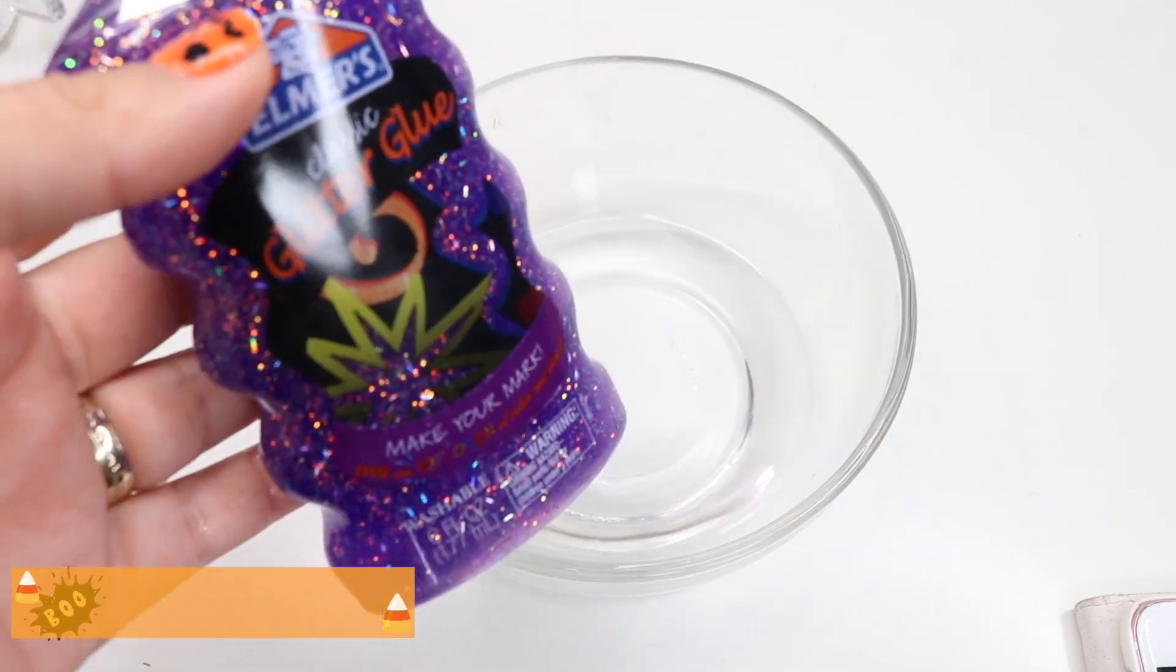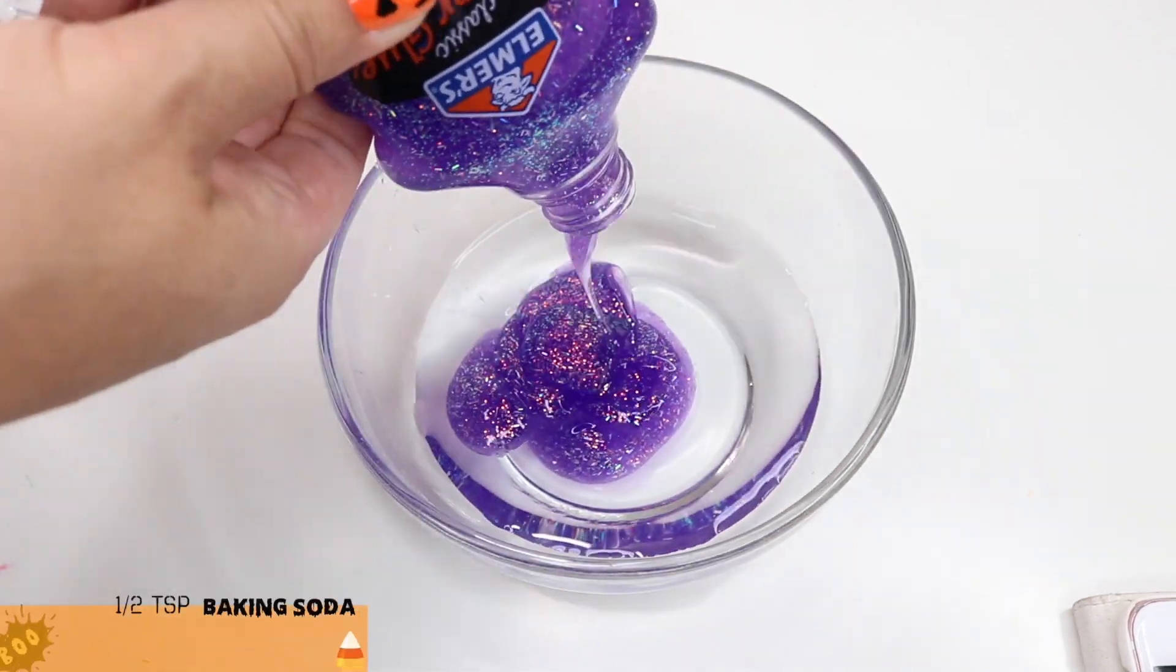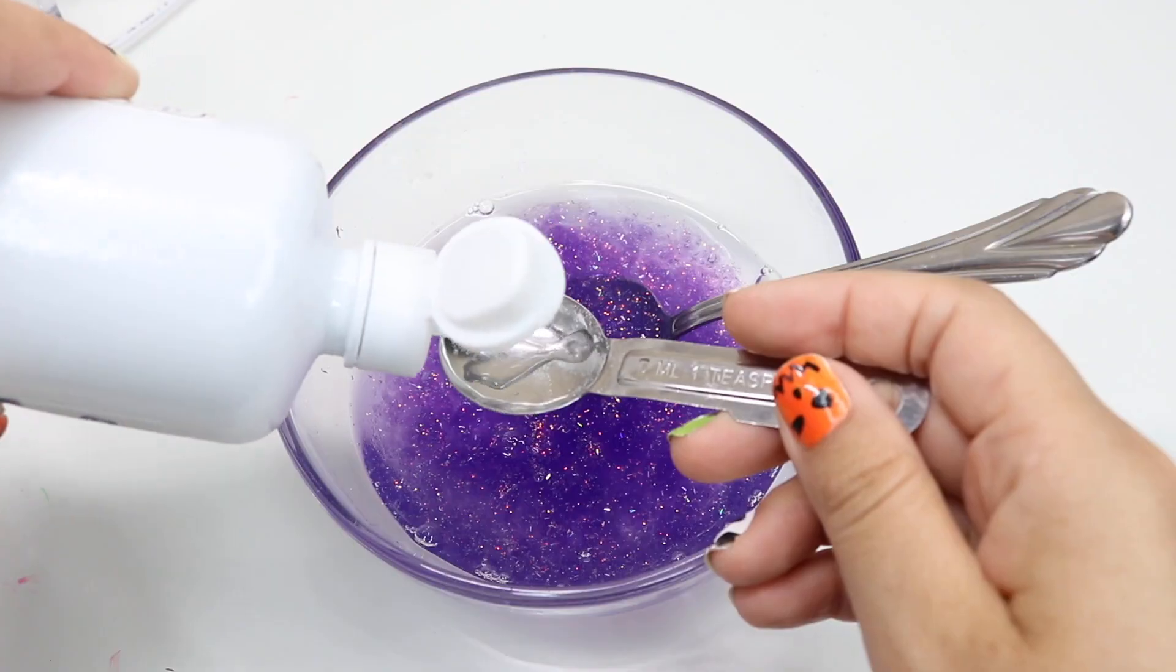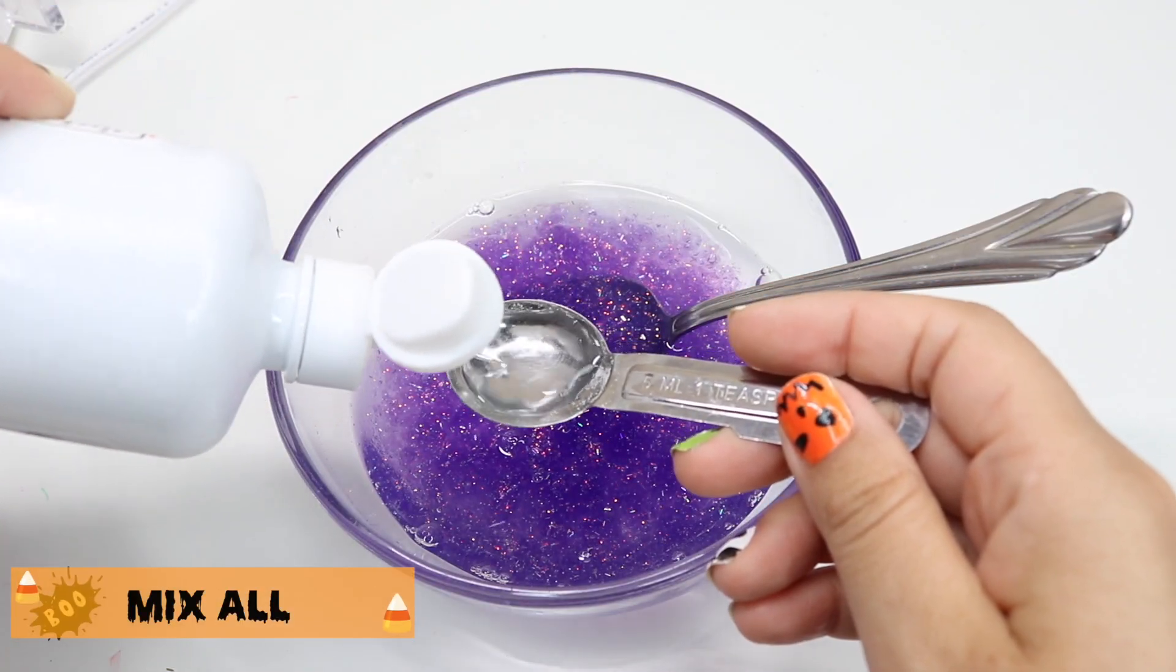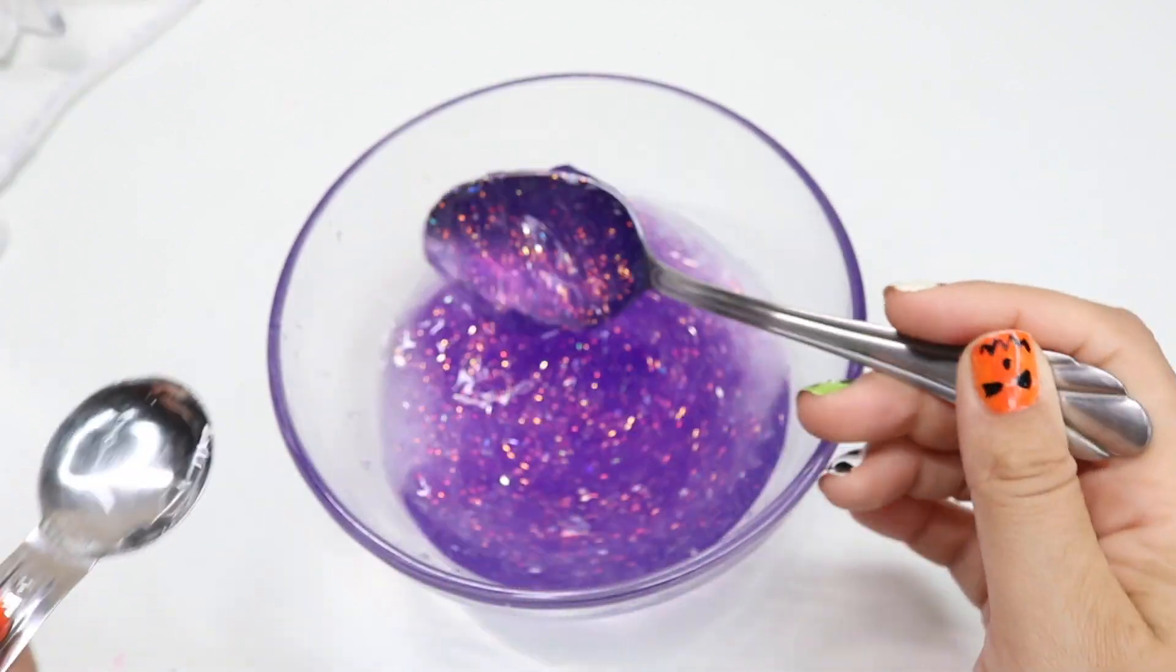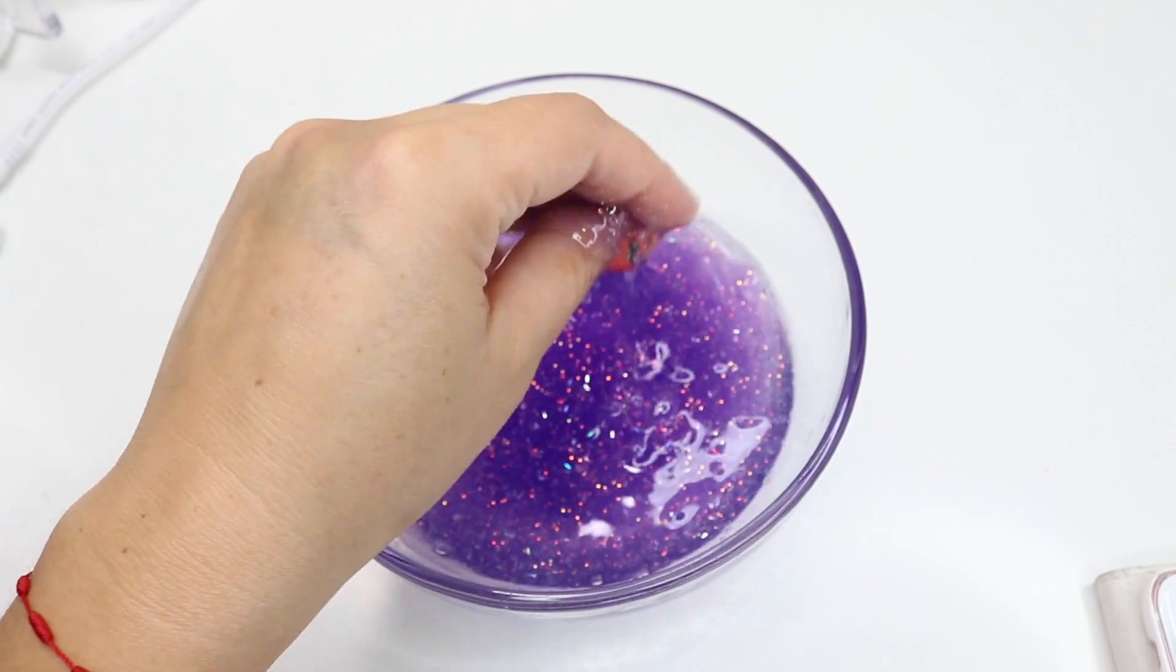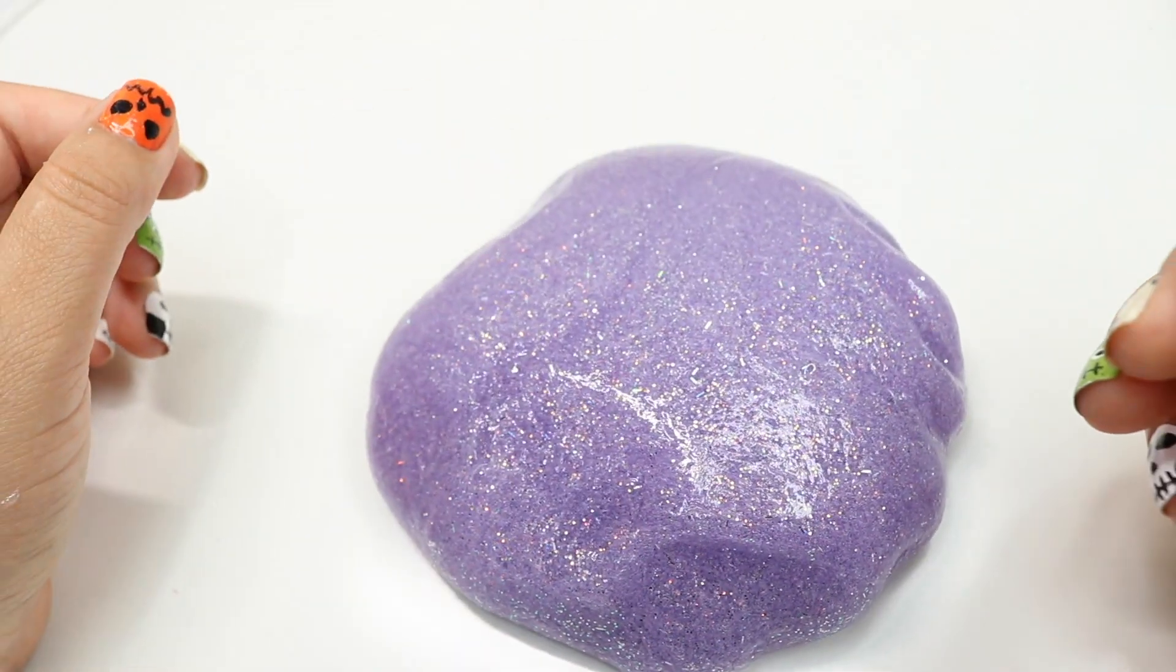For this third hack I wanted to share a different slime recipe with you guys just in case you didn't have one of the products at home. You can try it with a different product. I wanted to make a glittery slime and then I added some insects. I purchased these insects at the dollar store and look at how fun this slime is.